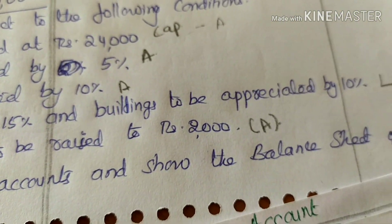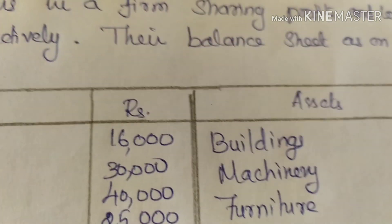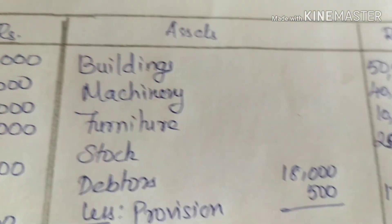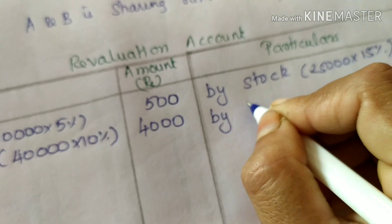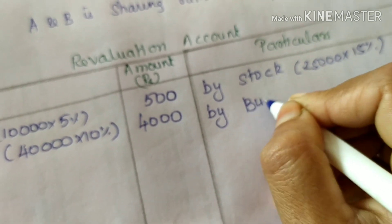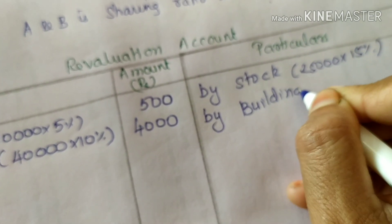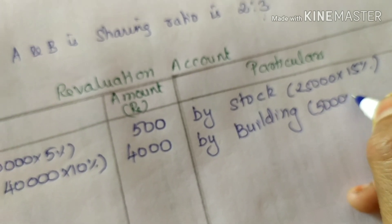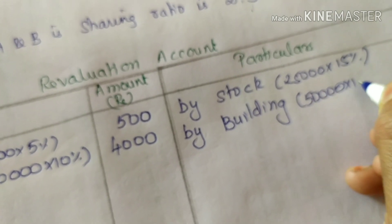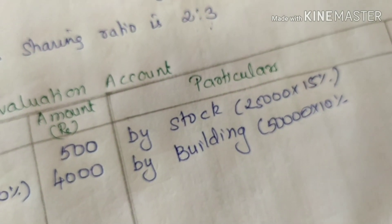Building is to be appreciated by 10%. Building value is 50,000. So 50,000 into 10% = 5,000. Building appreciation is 5,000.